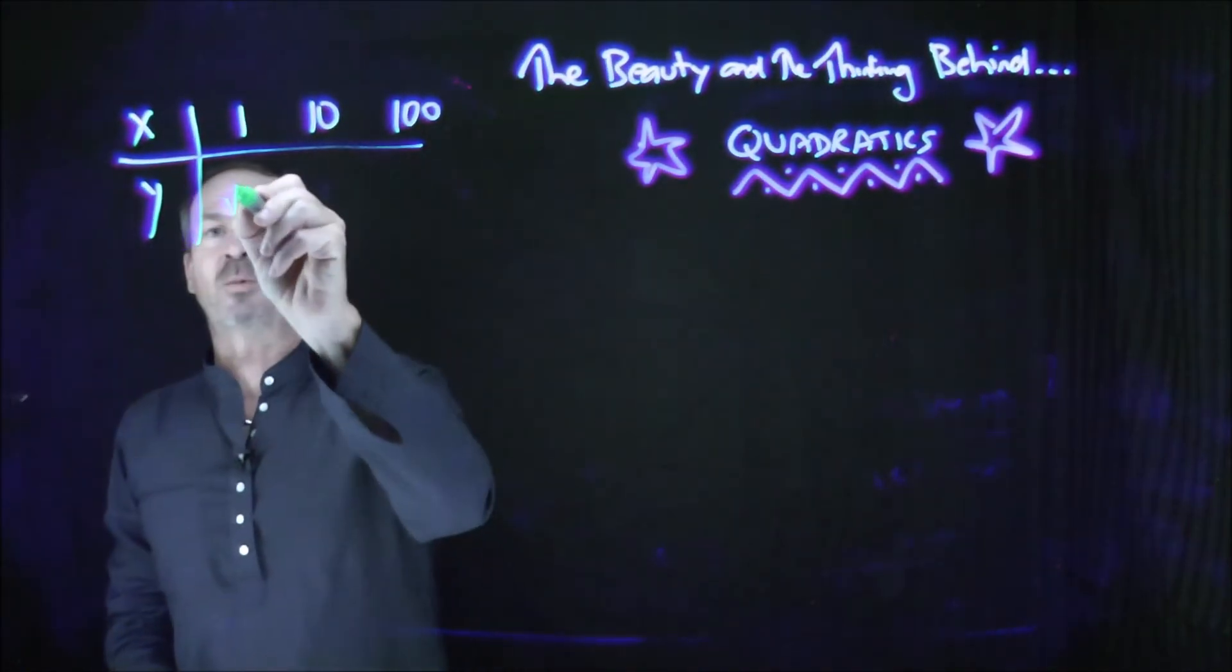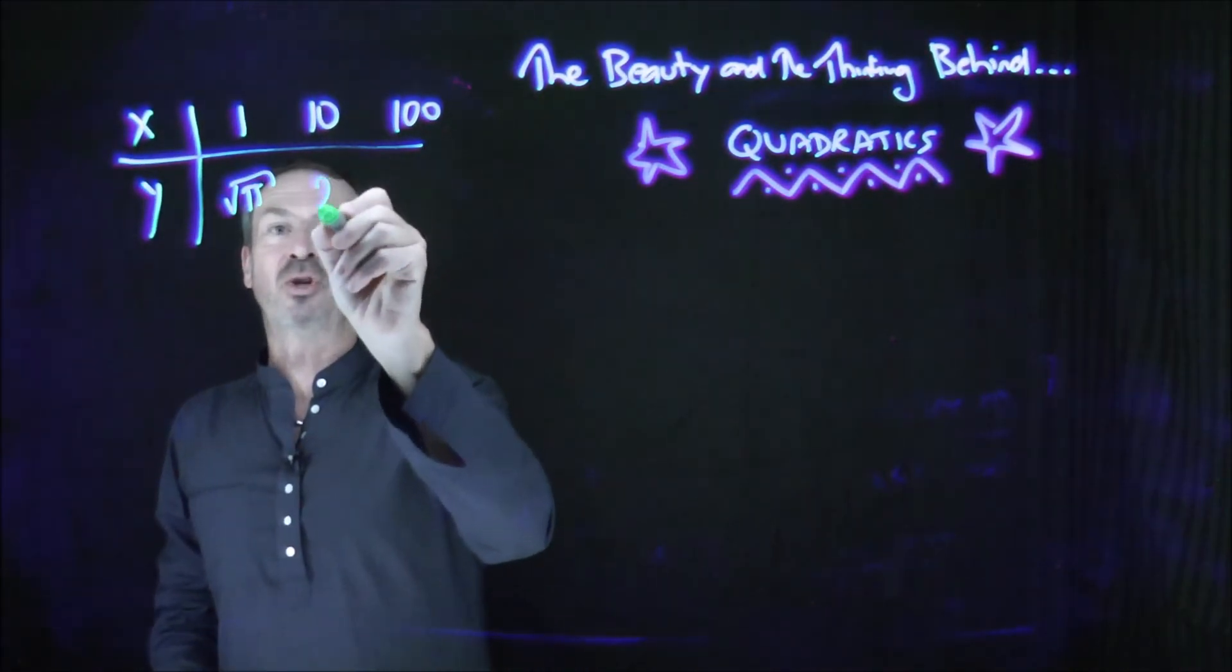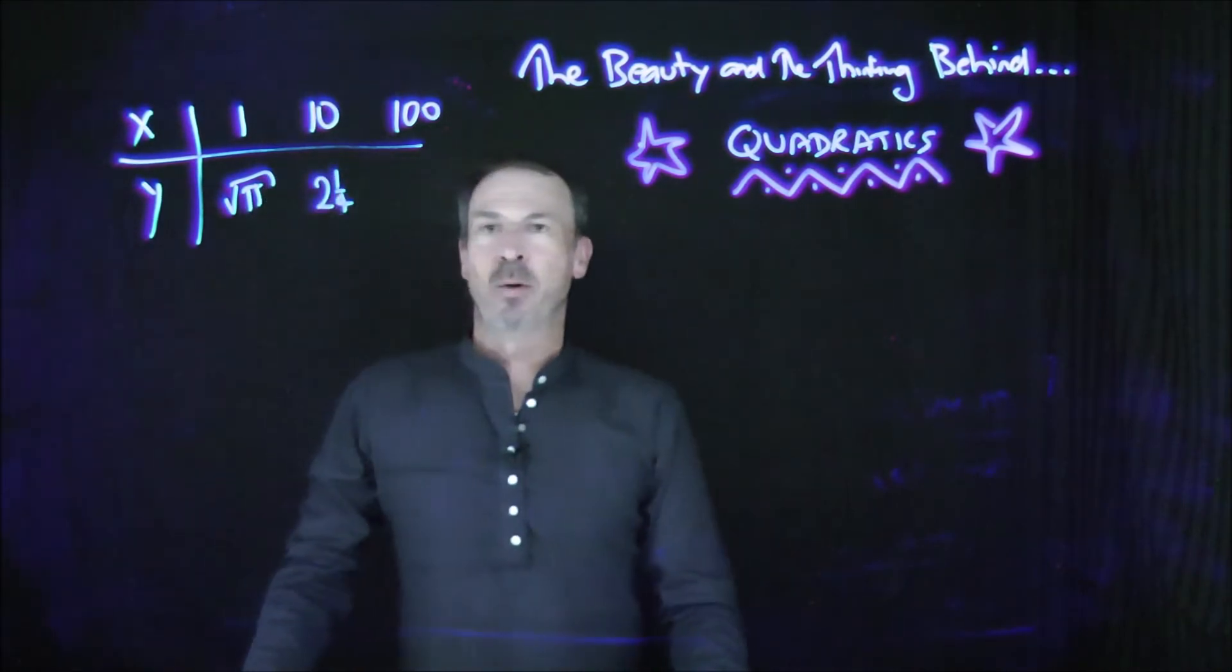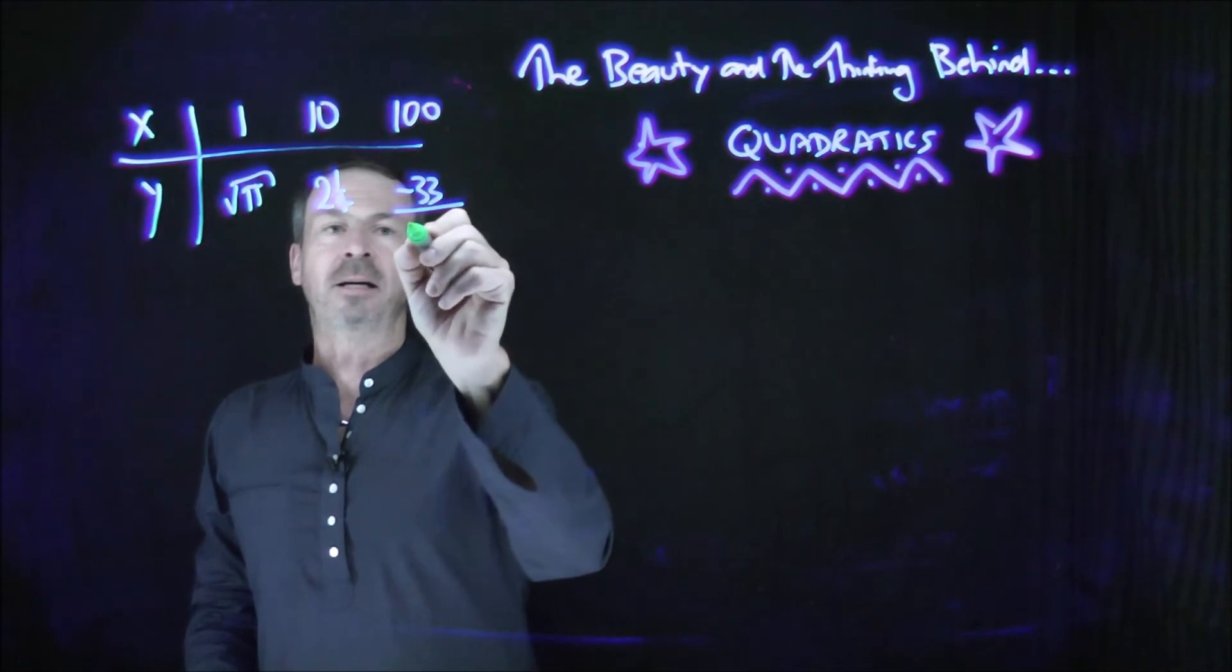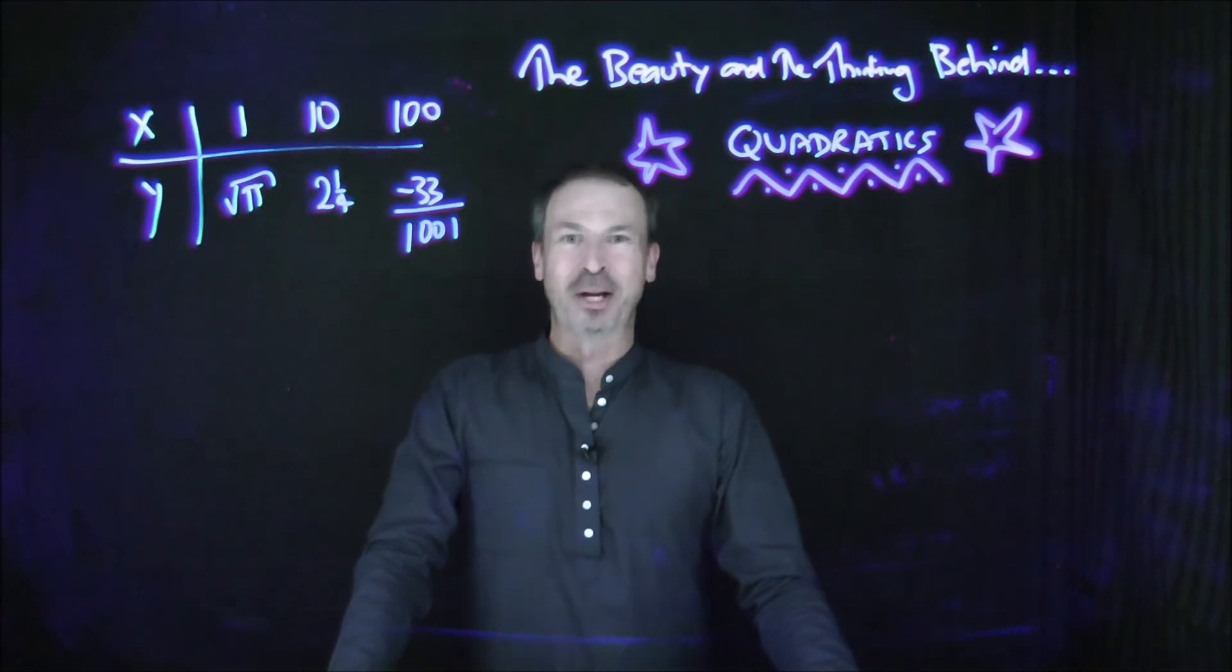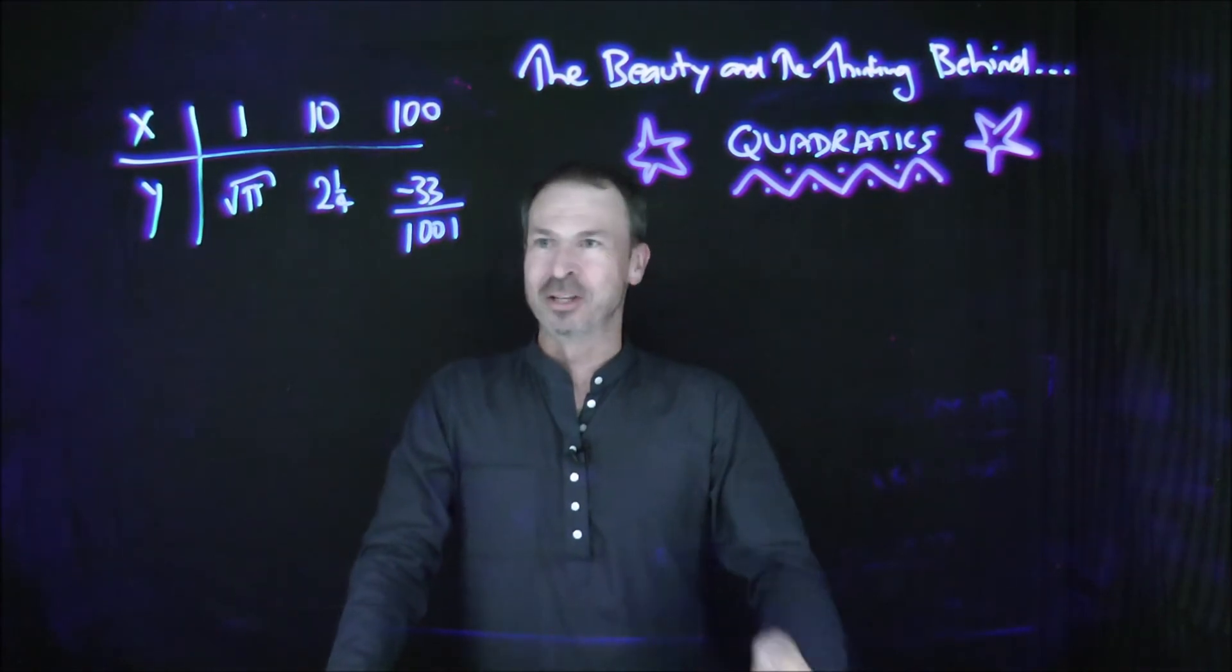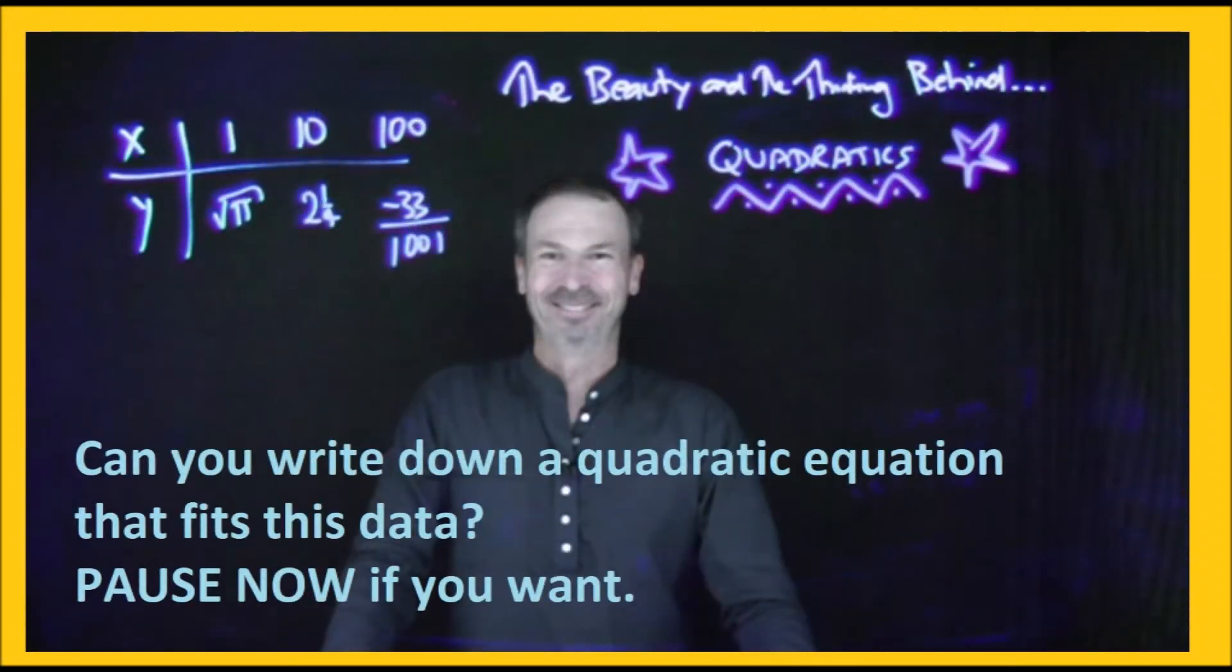When x is 1, I'd like the square root of pi to come out. Oh, we have a bug. When x is 10, I'd like 2 and a quarter to come out. And when x is 100, I'd like negative 33 over, I don't know, 1001 to come out. Okay. Can you just write down a quadratic expression, a quadratic equation that fits that data? Pause now if you want to give it a try.